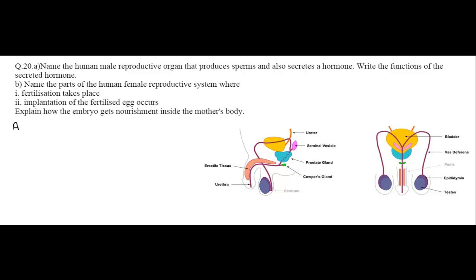Name the human male reproductive organ that produces sperms and also secretes a hormone. Write the functions of the secreted hormone. Name the parts of the human female reproductive system where fertilization takes place and where implantation of the fertilized egg occurs. Explain how the embryo gets nourishment inside the mother's body.